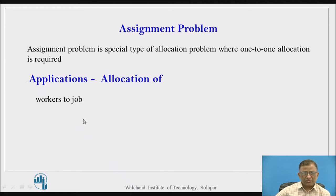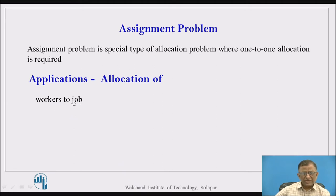One application is allocation of workers to jobs. It is a very peculiar requirement of assignment that a number of workers are available which are required to assign for different jobs to be performed. The workers can do the jobs with different efficiency, meaning the time taken by each worker to perform each job is different. It is an important task for a manager to allocate available workers to perform the required jobs so that the effectiveness satisfies the objective.